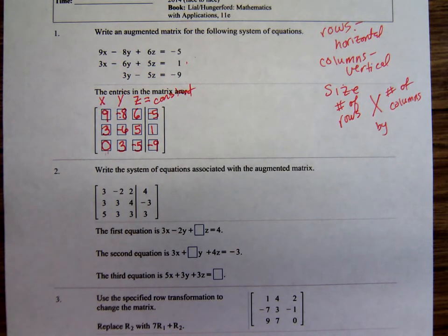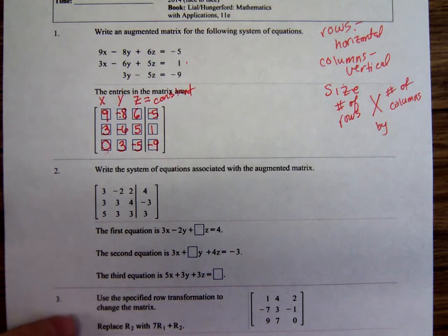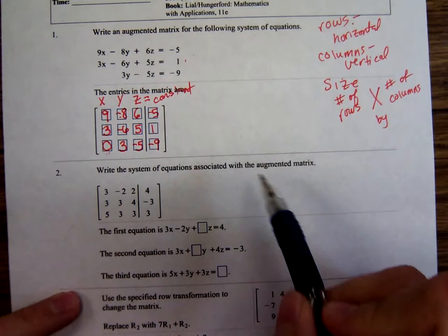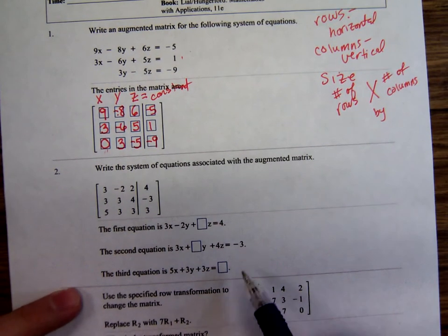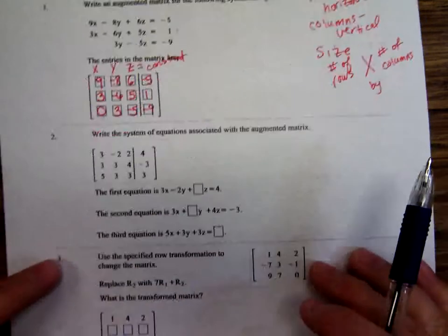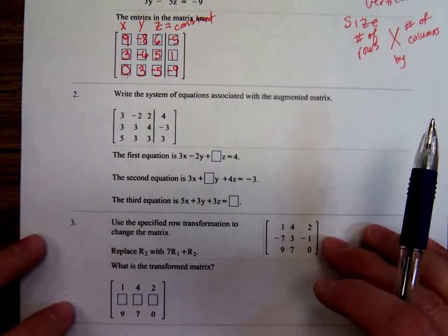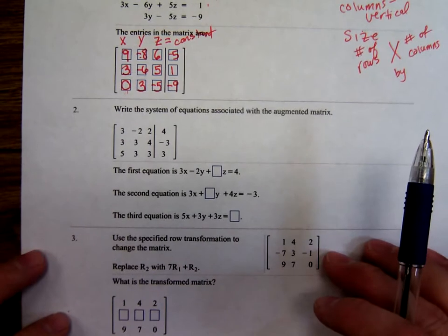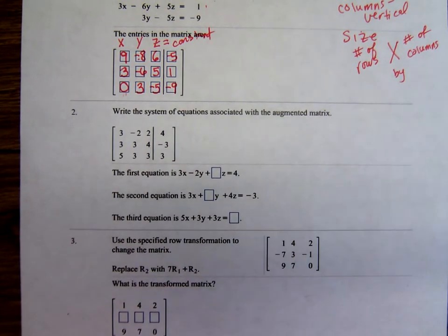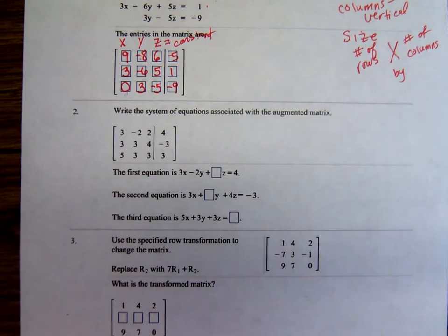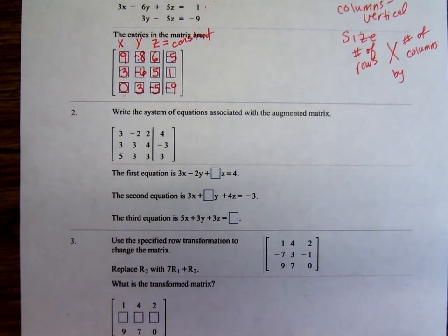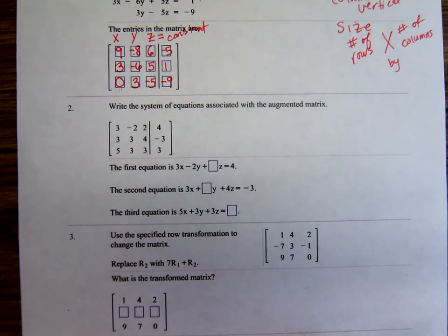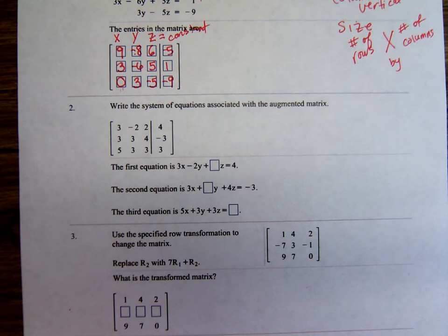On number 2, we're given the augmented matrix and it says write the equations. Looking at what they've written here. Let's see if I can adjust this so it's not too dark or too bright. Are y'all caught up with me?